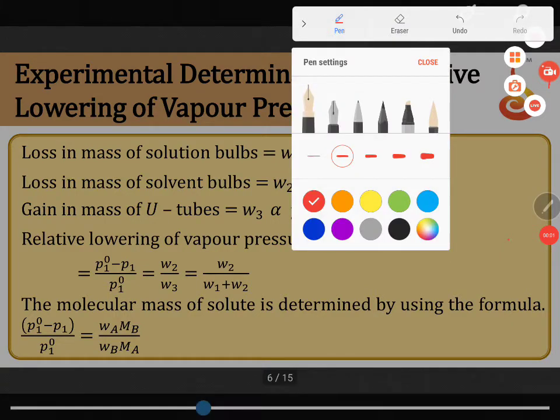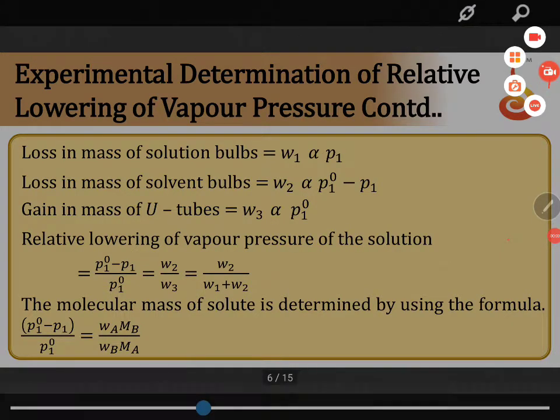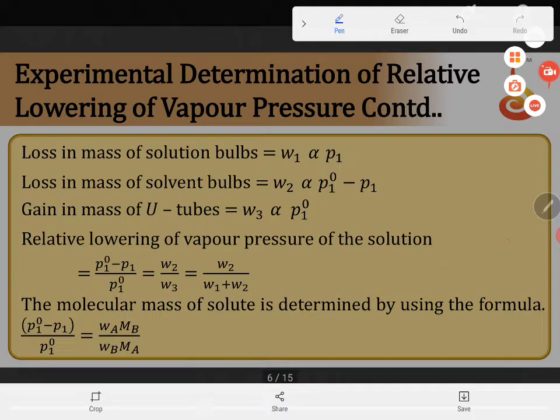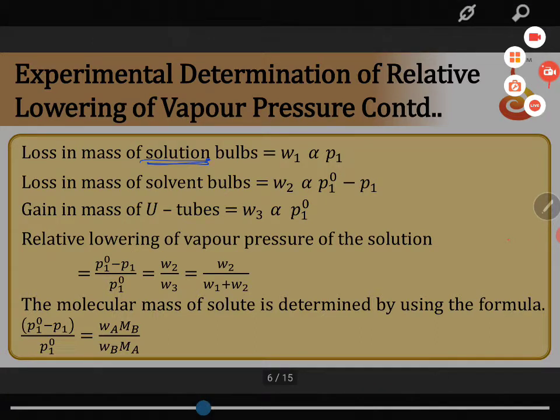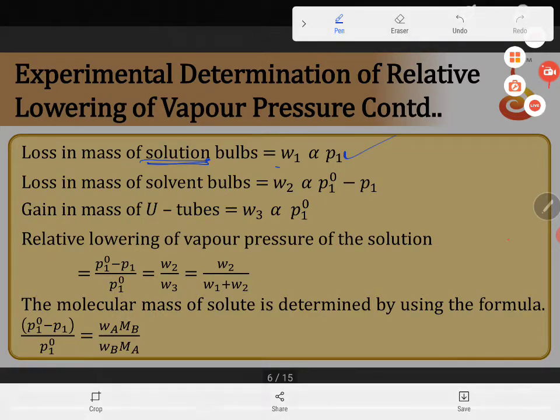Coming to the calculation part, loss of mass in the solution bulb will be proportional to W1, that is W1 is proportional to P1. P1 is the vapor pressure of water in the solution compartment.